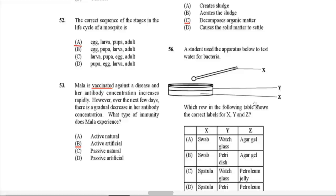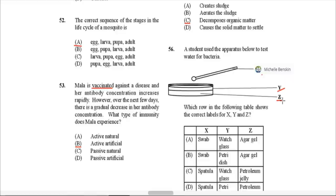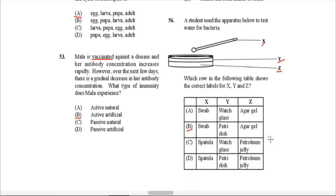Question 56: A student used an apparatus to test water for bacteria. Which row shows correct labels for X, Y, and Z? X is the swab used to wipe the water along the surface of the agar. Y would be the petri dish. Z would be the agar gel — the surface being swabbed. The correct answer would be B. The others don't make sense: it's not a spatula, not a watch glass, and certainly not petroleum jelly.